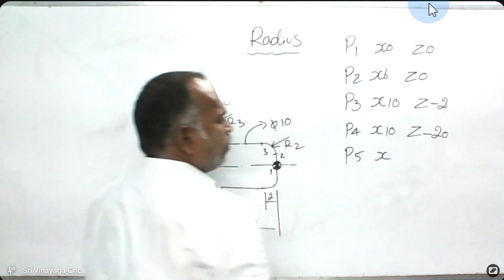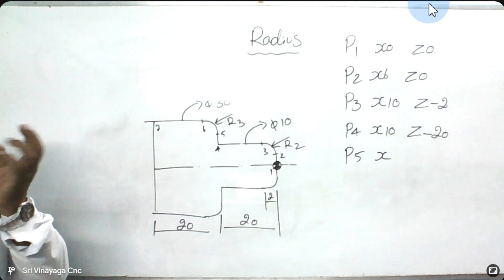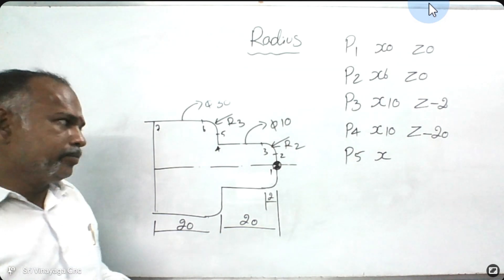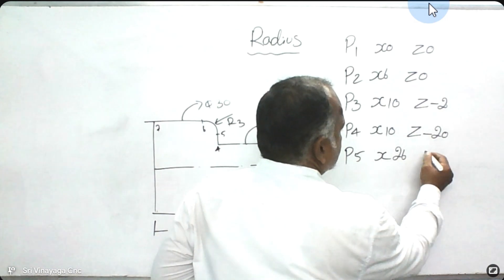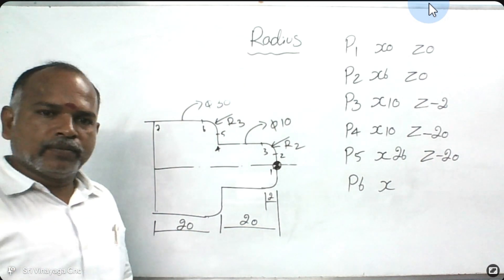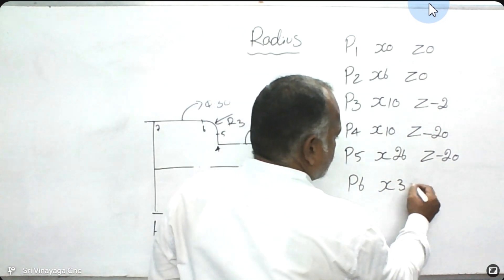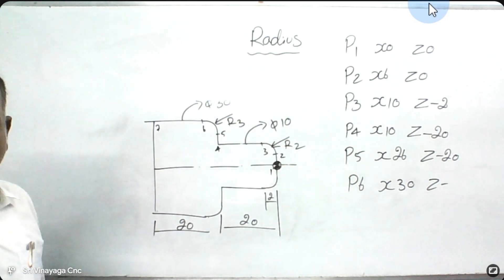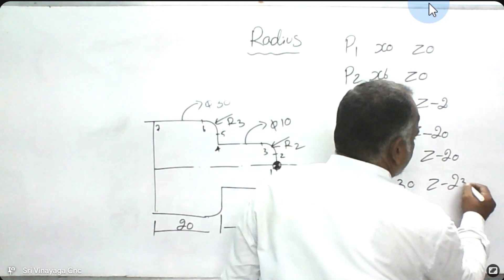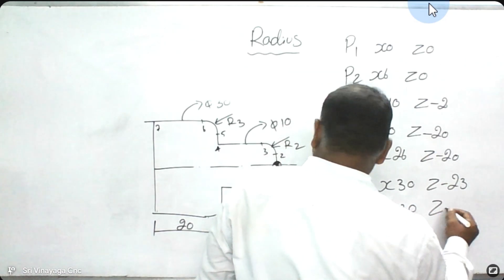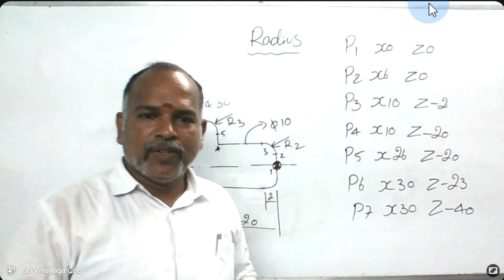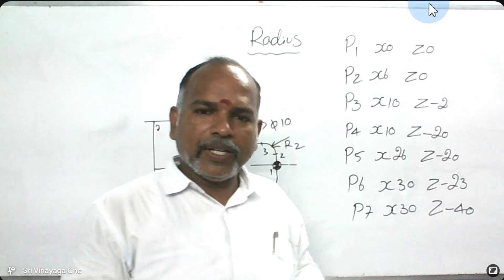Point number 5: X26, Z minus 20. Point number 6: X30, Z minus 23. If you know how to calculate this radius, you can handle it. Instead of P1, P2, P3, wherever a radius is needed, we put G02 or G03 in the program.